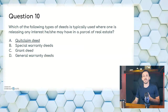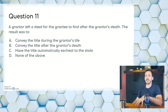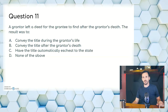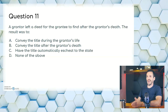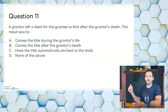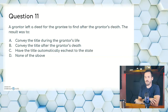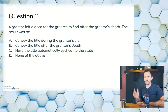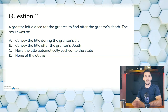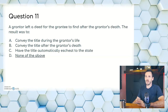Question eleven: a grantor left a deed for the grantee to find after the grantor's death. The result was — A, to convey the title during the grantor's life; B, convey the title after the grantor's death; C, have the title automatically escheat to the state; or D, none of the above. The title would go to the beneficiary in the deceased owner's will, or to the heirs if no will is made. The answer is D, none of the above — which is probably why this question was confusing.